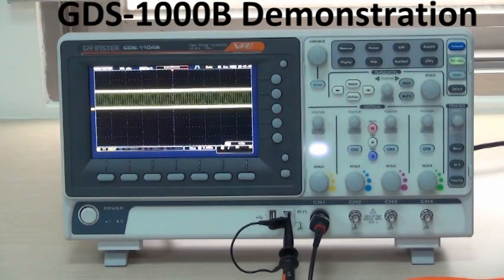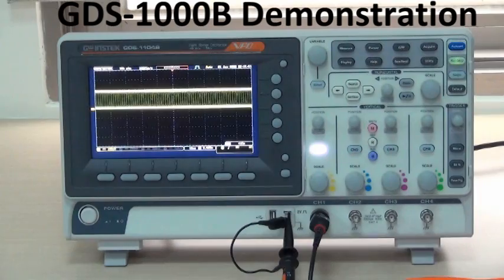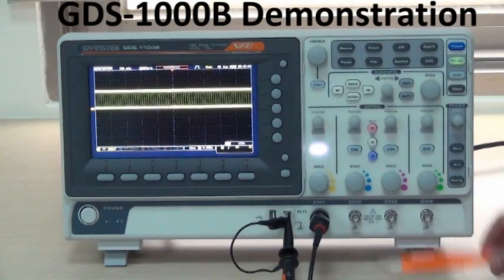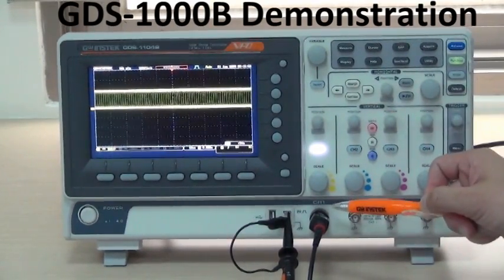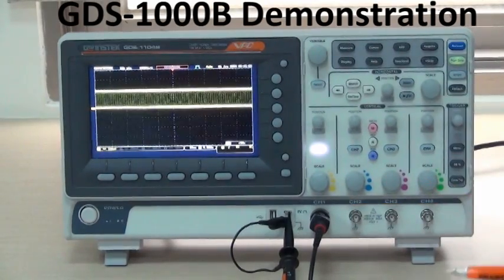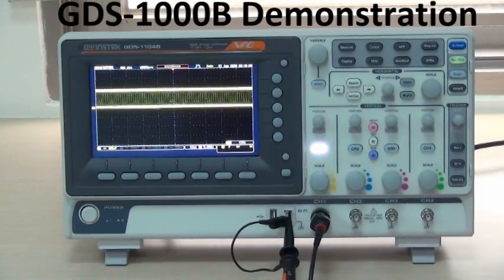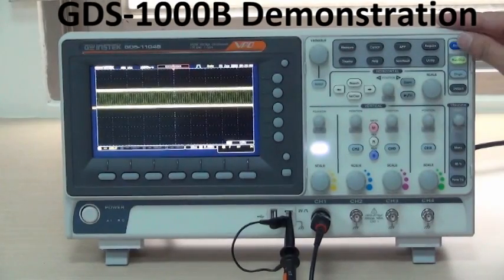For GDS-1000B basic operation demonstration, first connect probe with DUT's signal input port. Next, press Auto Set to perfectly show DUT's waveform.